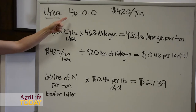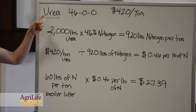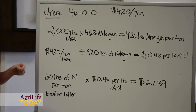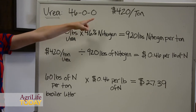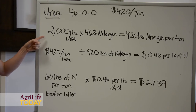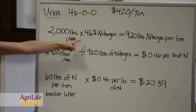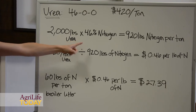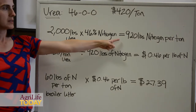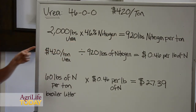Urea is 46-0-0, meaning that 46% of that product is nitrogen, with no phosphorus and no potassium. In East Texas, we priced urea at $420 per ton, and one ton is 2,000 pounds. So if we have 2,000 pounds — one ton of urea — that's 46% nitrogen. We multiply 2,000 pounds by 46%, giving us 920 pounds of nitrogen within that ton of urea.